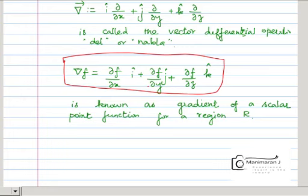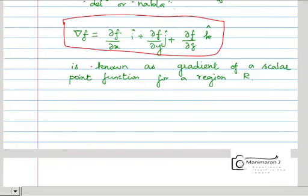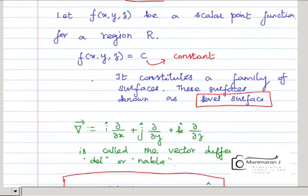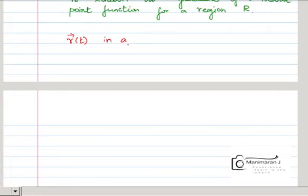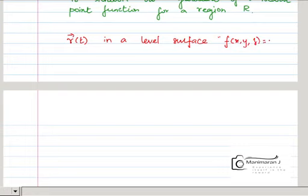What is the geometrical meaning? So f of x, y, z equal to some constant is a surface. We know that f of x, y, z equal to c is the level surface. I will take some arbitrary curve in that level surface — suppose I take the curve r of t in the level surface f of x, y, z equal to some c1, which I fix.